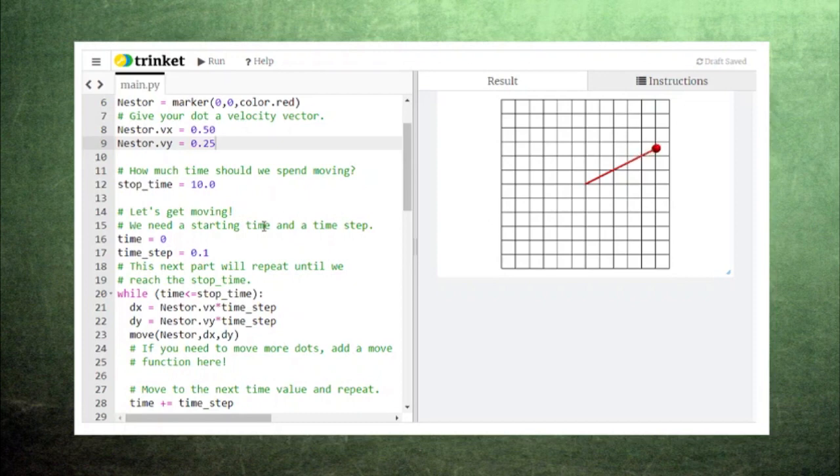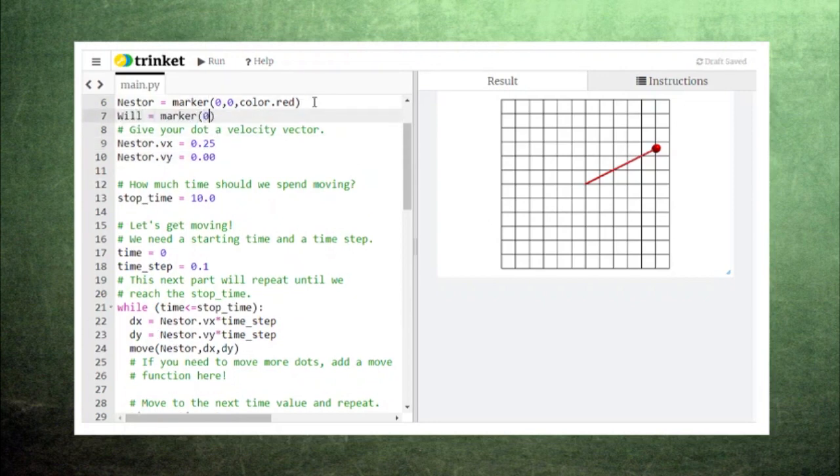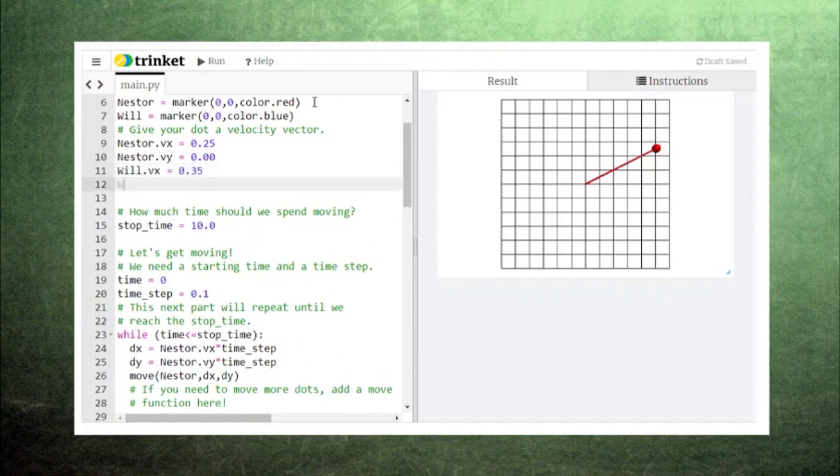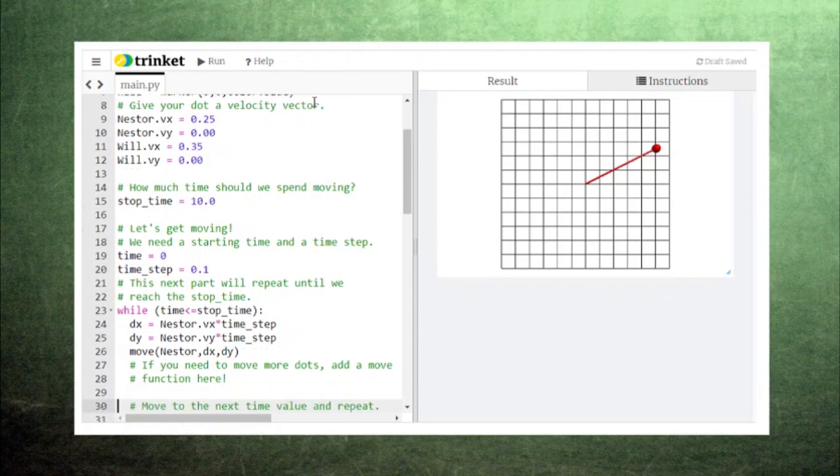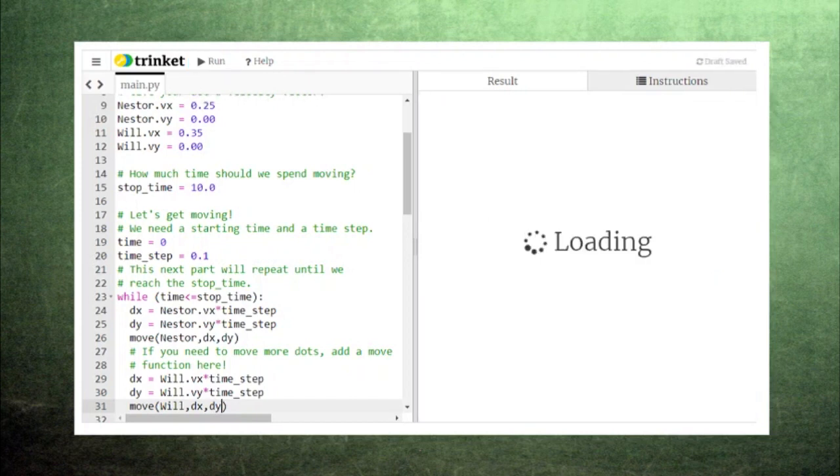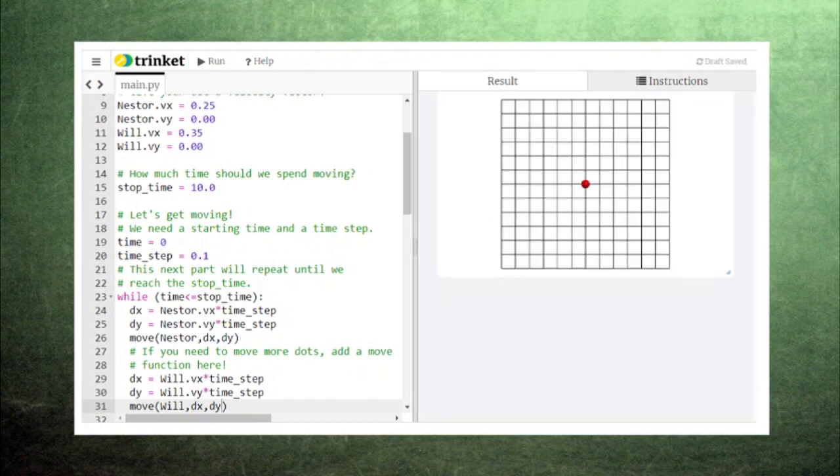You can use this code to animate as many markers as you like. Let's add a blue dot named Will and give him a velocity that is slightly faster than Nestor's. We also need to add commands to move Will inside the loop at the same time as Nestor. Running the code, we can see Will get ahead of Nestor.